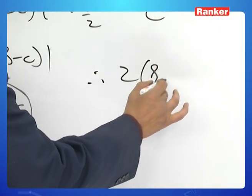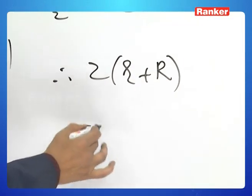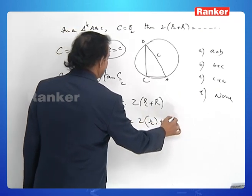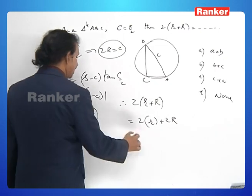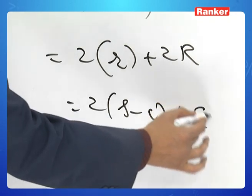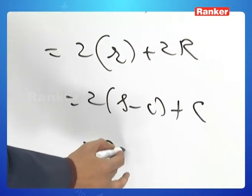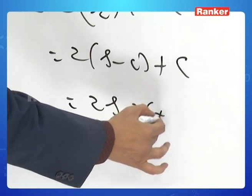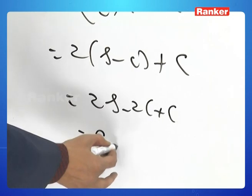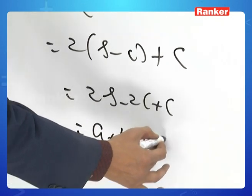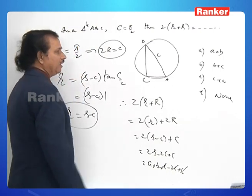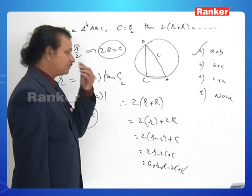Now compute 2r + 2R = 2(s − c) + c = 2s − 2c + c = 2s − c = (a + b + c) − c = a + b. The answer is a + b.